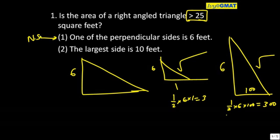Don't think if it is 6 then it has to be 6, 8, 10. That will be wrong logic. With 6 you can make infinite triangles.